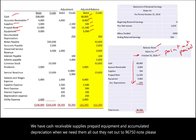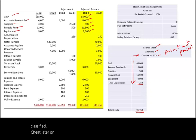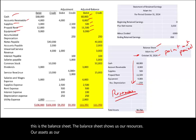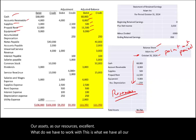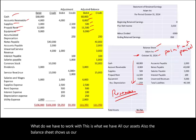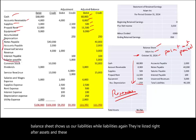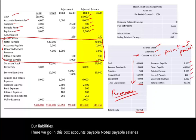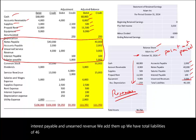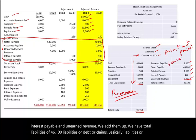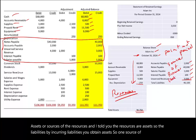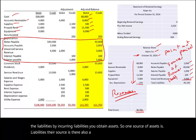This is a simple balance sheet — we'll look at a classified balance sheet later in much more detail. The balance sheet shows us our resources: assets are our resources. Also, the balance sheet shows our liabilities — accounts payable, notes payable, salaries payable, interest payable, and unearned revenue — totaling $46,100. Liabilities are claims and also sources of assets. By incurring liabilities, you obtain assets. So one source of assets is liabilities.